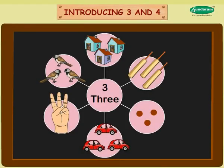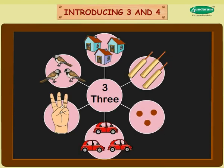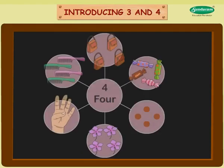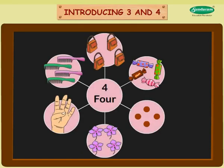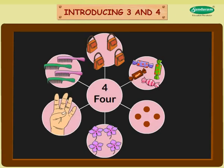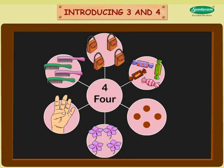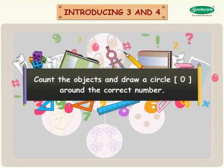Count the objects. Look at the number. Three birds. Three houses. Three bats. Three dots. Three cars. Three fingers. Four purses. Four combs. Four fingers. Four candies. Four dots. Four berry wrinkles. Count the objects and draw a circle O around the correct number.